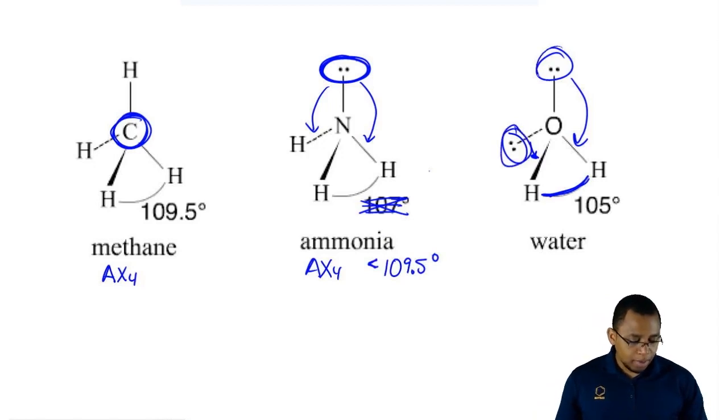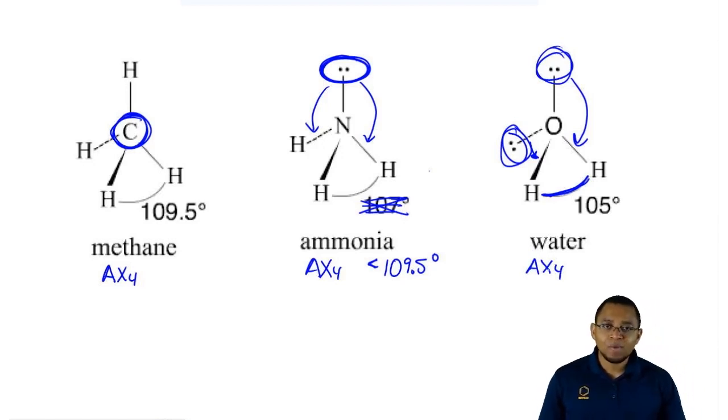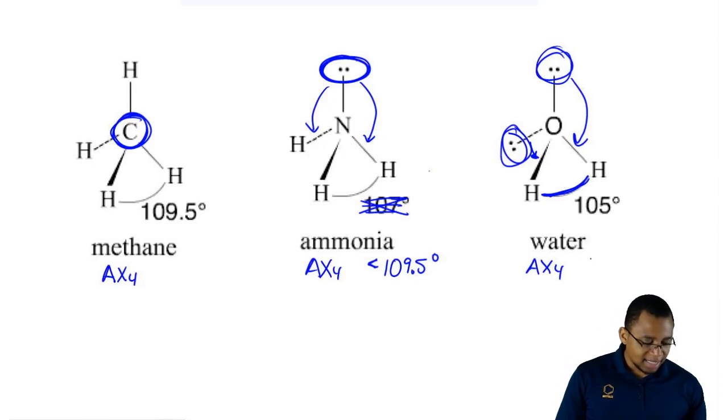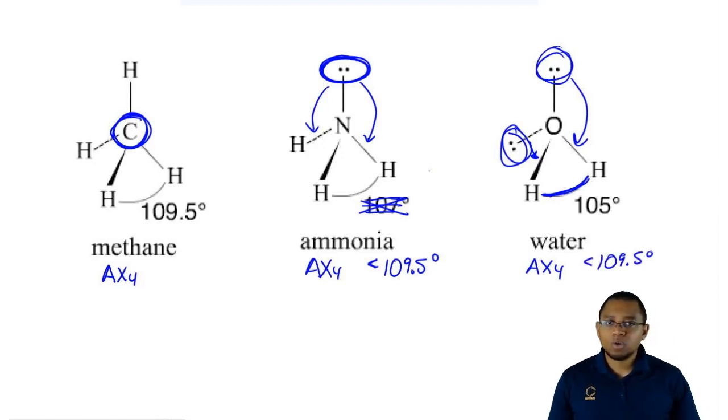Here, since you have two lone pairs, you could say the same exact thing again. Its electronic geometry is still AX4. Ideally it should be 109.5 but the lone pairs being there make it less than 109.5. This is what your professor would be looking for and this is what you would have to say.